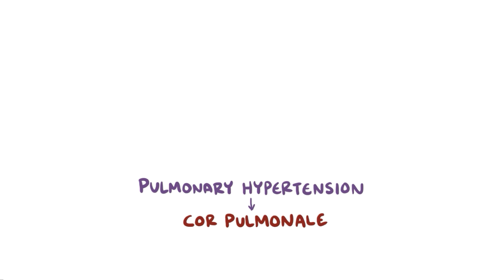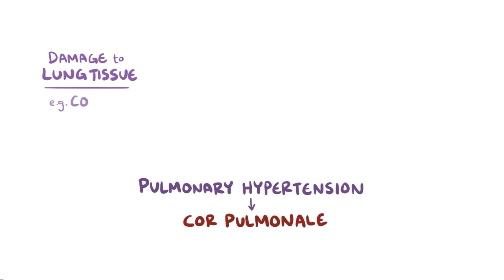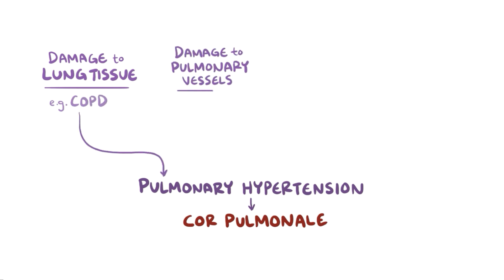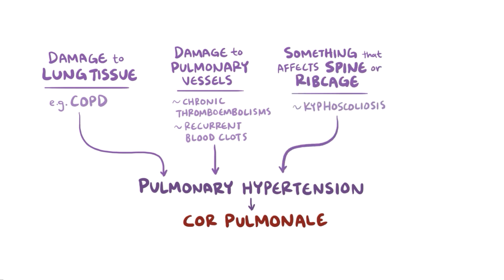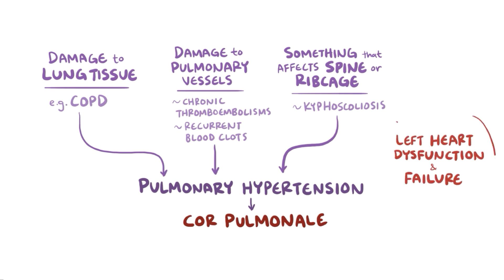Cor pulmonale results from pulmonary hypertension, which typically comes from one of three categories of diseases: something that damages the lung tissue, like chronic obstructive pulmonary disease; something that damages the pulmonary vessels themselves, like chronic thromboembolisms or recurrent blood clots; or something that affects the spine or ribcage, like kyphoscoliosis, where the spine is curved and the lungs can't fully expand. An important distinction is left heart dysfunction or failure, which can result in pulmonary hypertension but wouldn't be considered cor pulmonale, because the initial problem is with the heart itself, not the lungs.